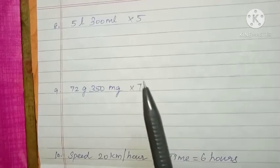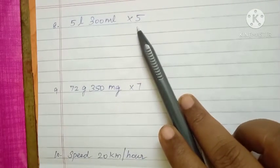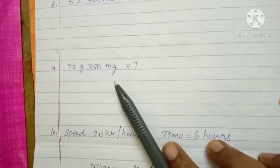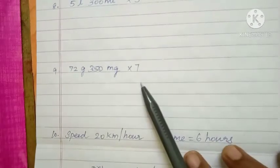Then next one, 5 liters 300 milliliters multiplied by 5 table. This one is used for multiplication. Then next one, 72 grams 350 milligrams, do for 7 table.